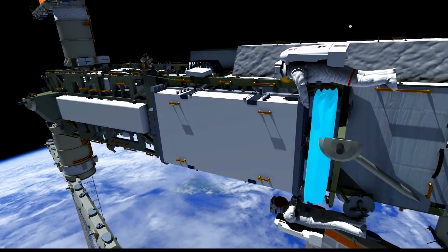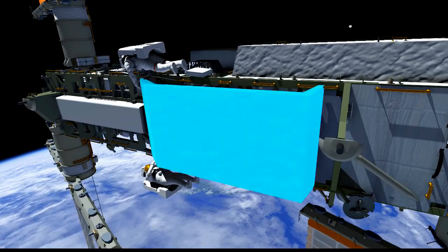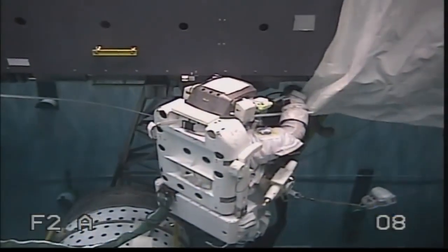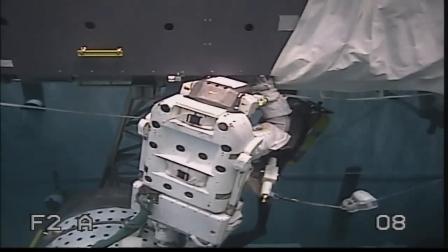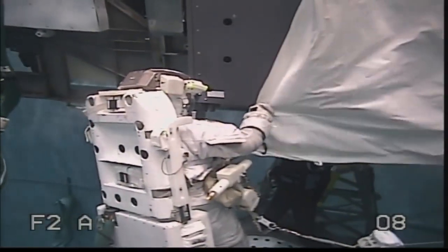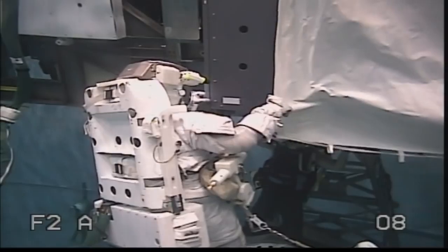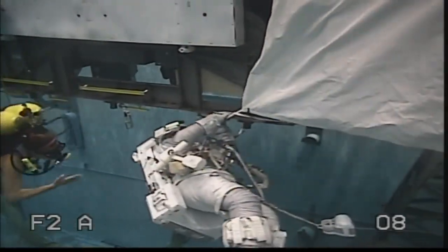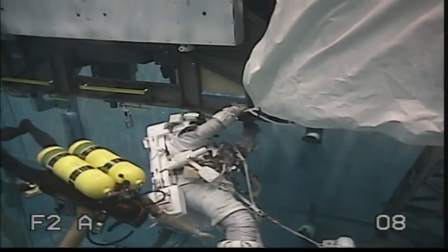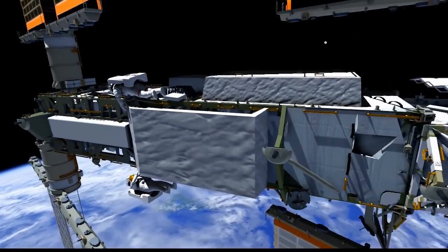The crew will then work together to install a thermal cover over the TTCR. This will protect it from extreme thermal environments. Here we see a crew member working in one of our NBL training sessions to get that thermal cover installed over the TTCR. It's definitely something that it takes two people to do. There is another crew member in the top view here. So one guy zenith, one guy nadir.